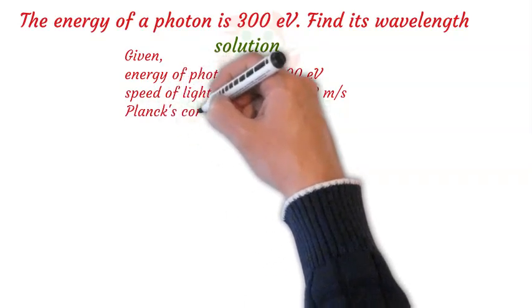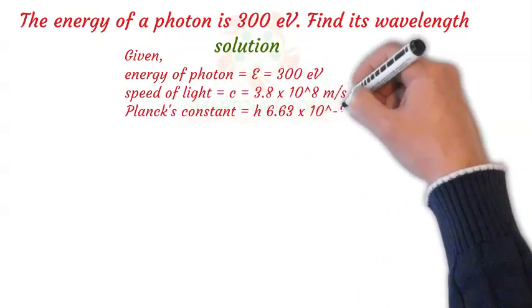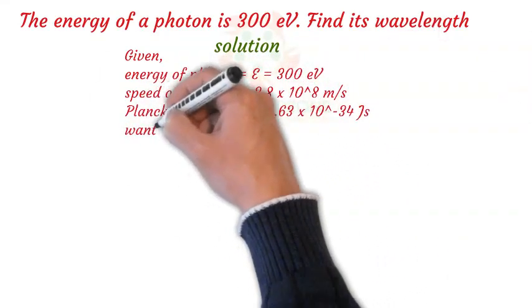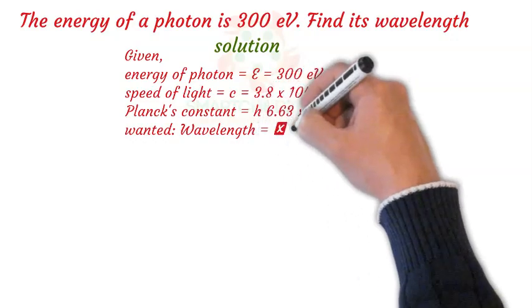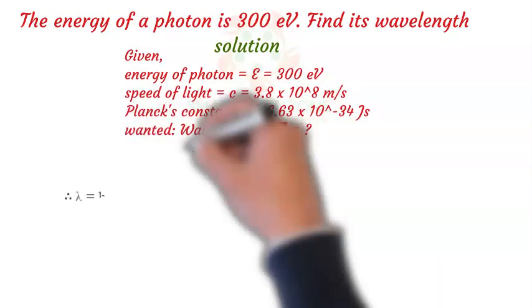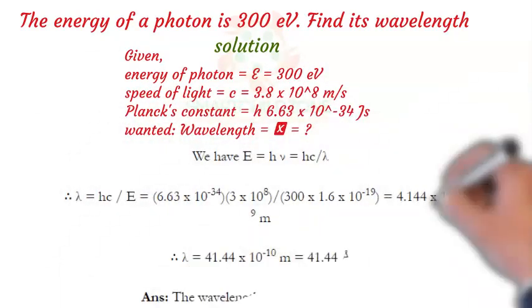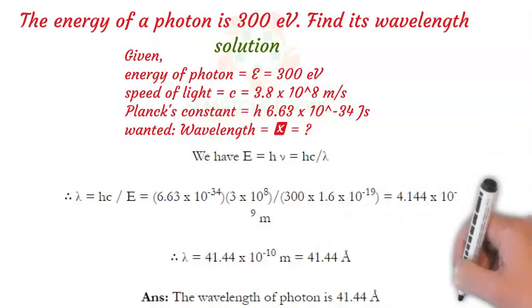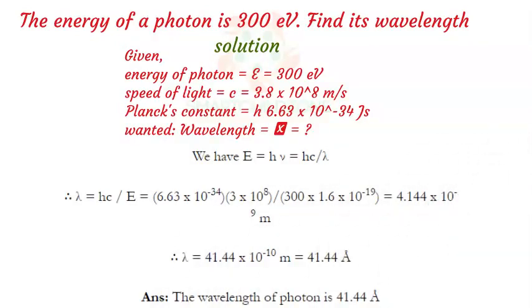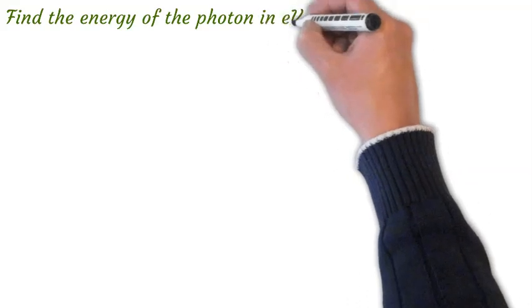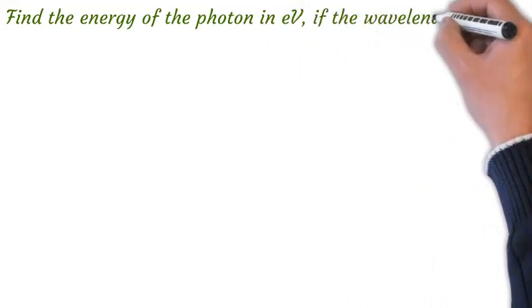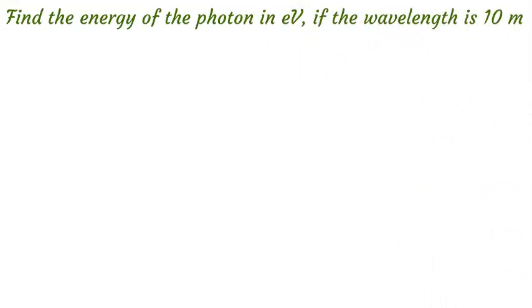We are given the energy of the photon, and we know the speed of light and Planck's constant. We can use these values to find its wavelength. Find the energy of the photon in electron volts if the wavelength is 10 meters.